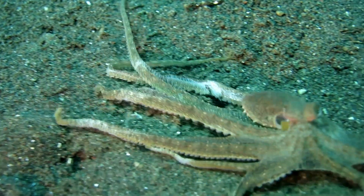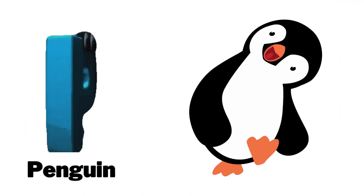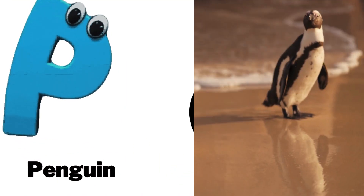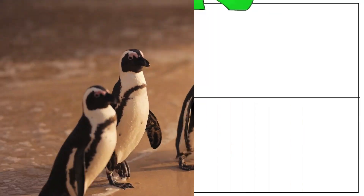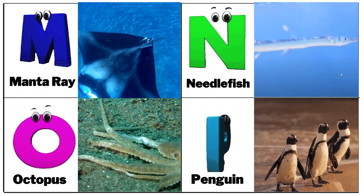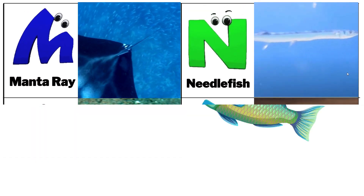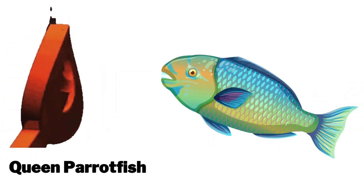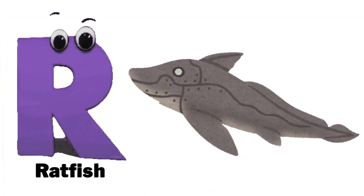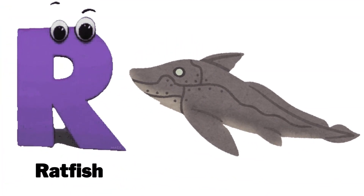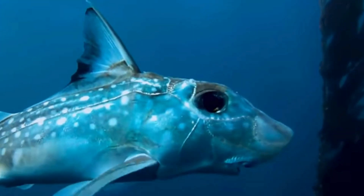O is for octopus. P is for penguin. Q is for queen parrotfish. R is for ratfish.